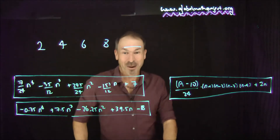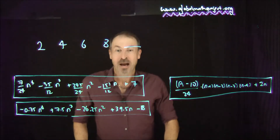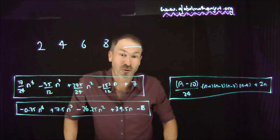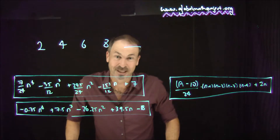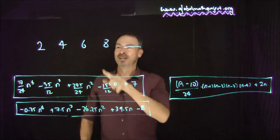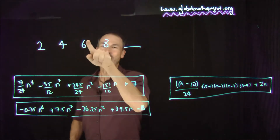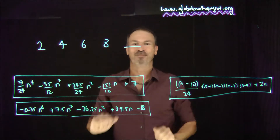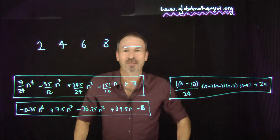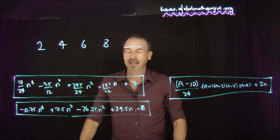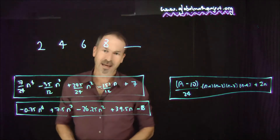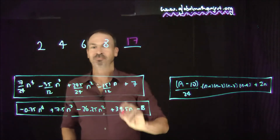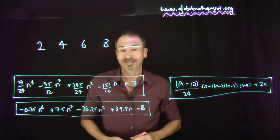I'm going to play a game now about what to do with sequences if you don't believe in patterns. For example, 2, 4, 6, 8 — something. What's the next number in the sequence? Well, clearly the answer is 17.